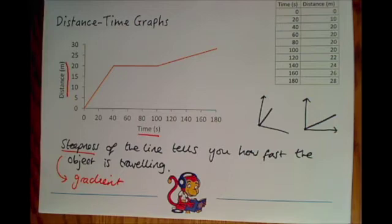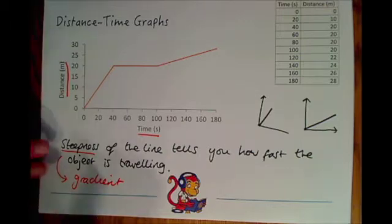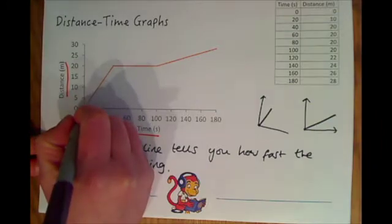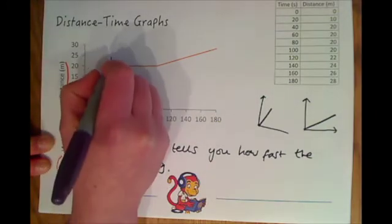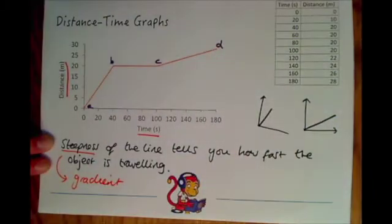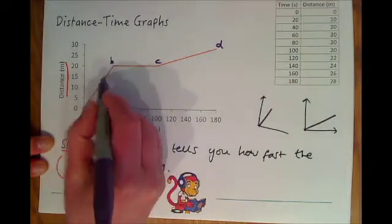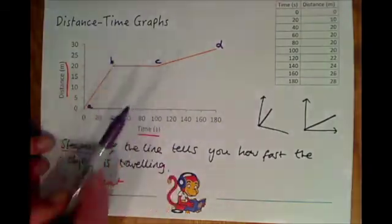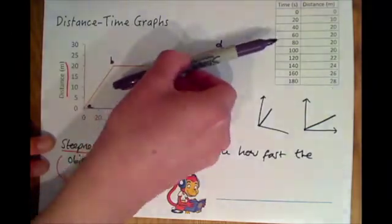If we take this example here you should be able to see at what place the object is travelling the fastest. Now if we put some letters on here to break it down we'll put a, b, c and d. Have a think about between which points the object is travelling fastest in this distance time graph. You should see here that the gradient is the steepest between a and b because it's steeper here than it is over here.